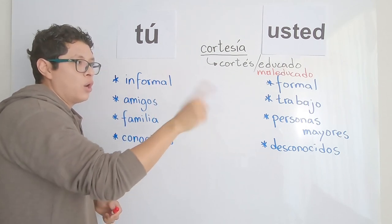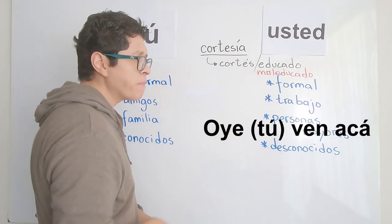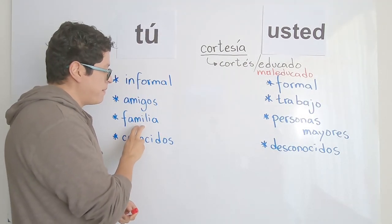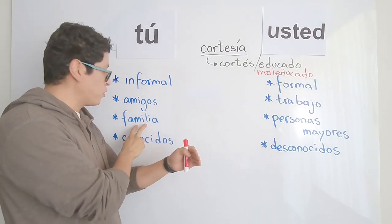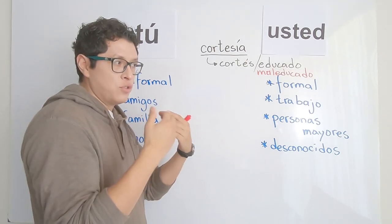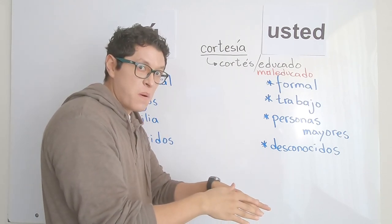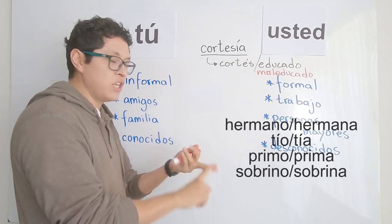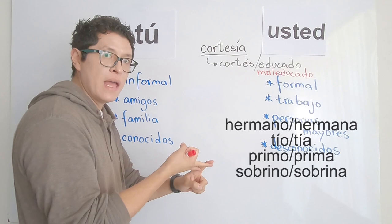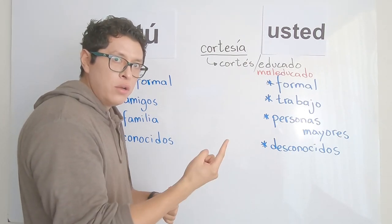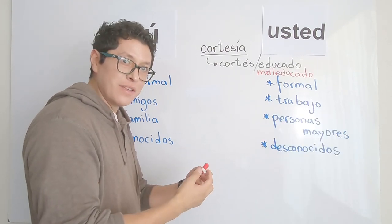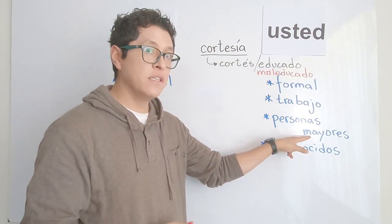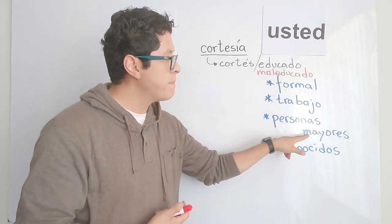With your friends you say 'oye tú, ven acá, necesito tu ayuda' — hey you, come here, I need your help. You can also use tú with family. Long ago people used to address their parents as usted, but not anymore. Generally, you can call family — hermano, hermana, tío, tía, primo, sobrino — with tú. But your abuelo or abuelita, your grandparents, are personas mayores — elderly — so some people address them as usted out of respect.